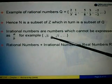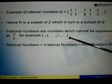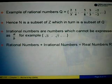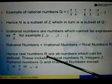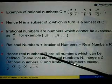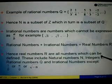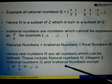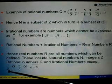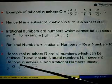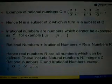So therefore, rational numbers, if we add to irrational numbers, all these numbers form the real numbers R. Hence, we can say real numbers R are all numbers which can be defined. This includes natural numbers and integers Z, rational numbers Q, as well as irrational numbers. Except 1 over 0, which cannot be defined, or any numbers that is divided by 0, or any square root of negative numbers.